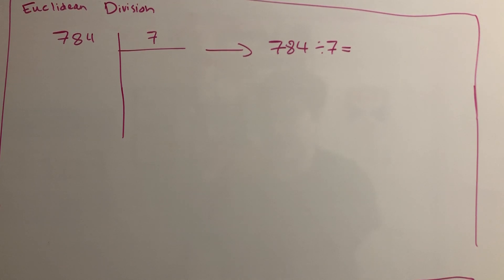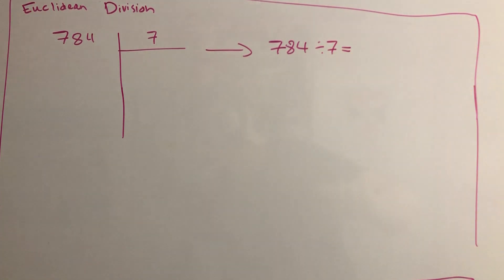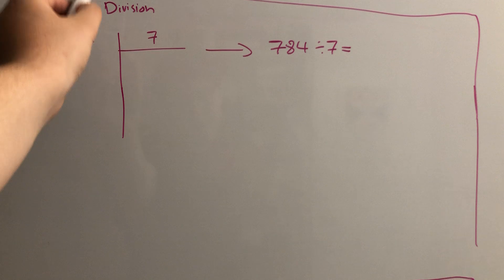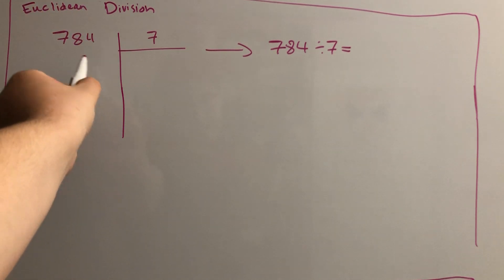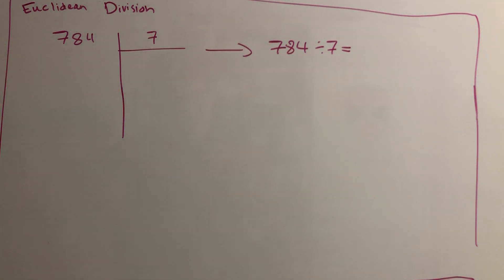Okay, so this video is about Euclidean division. The division we're making is 784 divided by 7. This is how you write it: you write 784 on the left, do a big vertical bar, and then a horizontal one right under the number you're dividing by, which is 7.